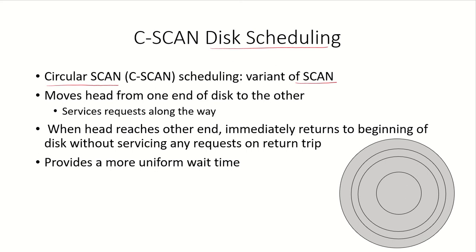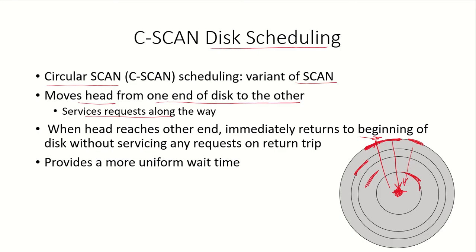In the C-scan disk scheduling algorithm, the head will move from one end of the disk to the other. So let's say the head is currently at track zero — it will move from this end towards the inner side of the disk and service all the requests on the way. If there is any read/write request for any track along the way, all those requests will be serviced as the head moves from one end to the other. Once it reaches the far end, it will immediately return to the beginning of the disk — back to track zero.